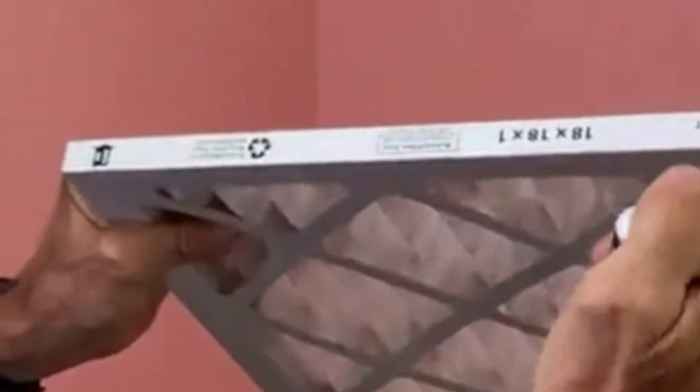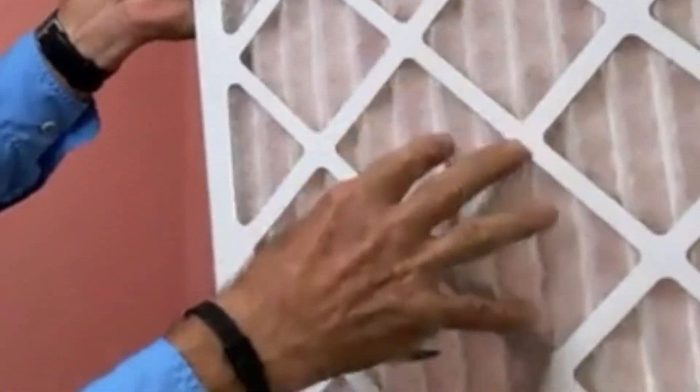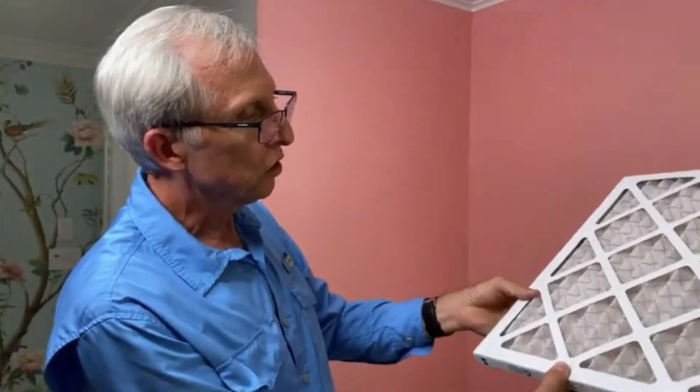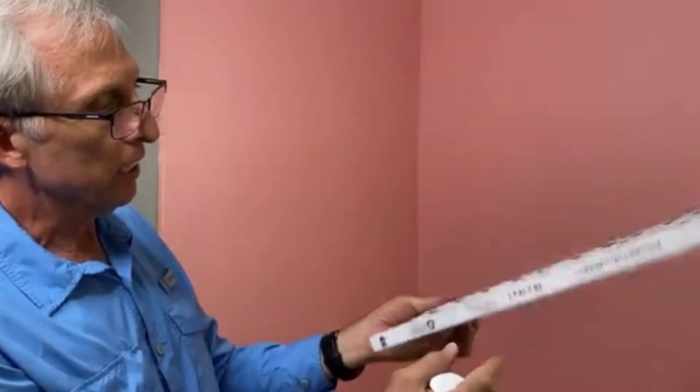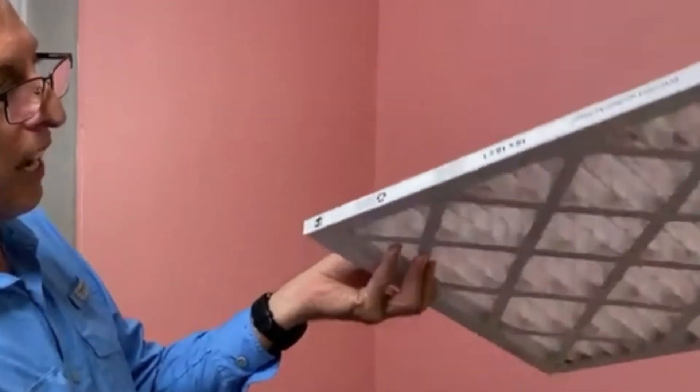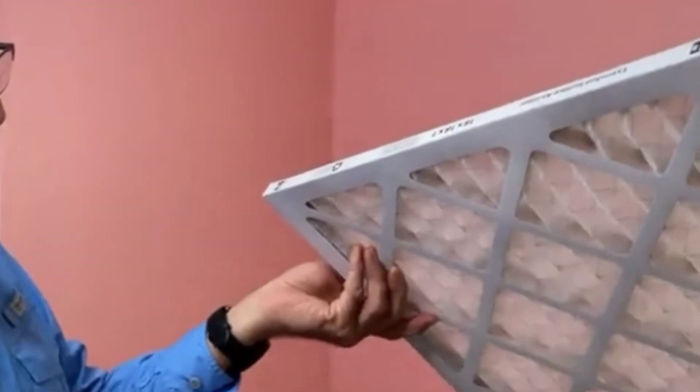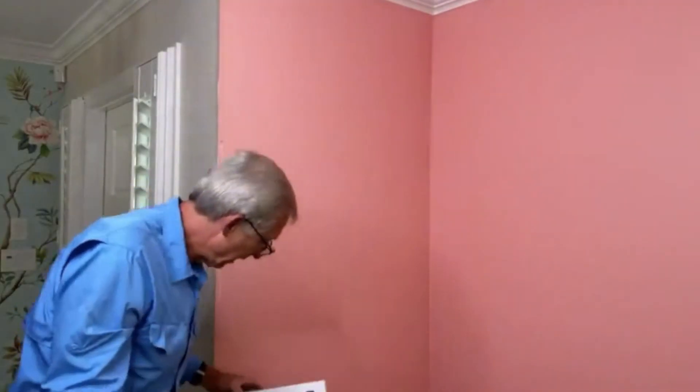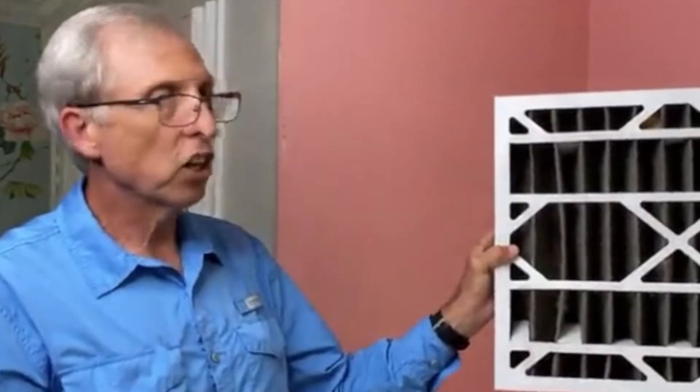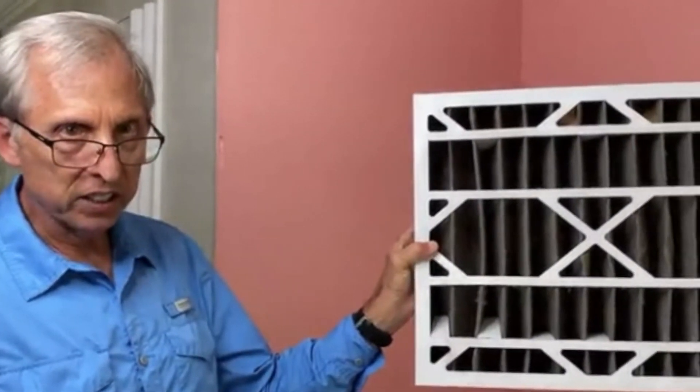Now if you look at the MERV 8 filter, it has an arrow on it and that's the direction of the airflow. See how nice and pretty this is on this side? I want you to notice the screen wire on this side. It actually holds the particulates as it's going through. Over time, this will get restricted. When they start getting restricted, like this is just an example, when they start getting restricted that looks like this...